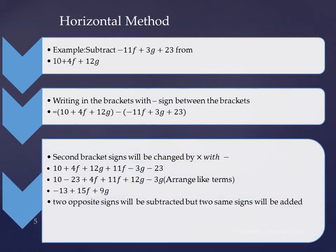Now in the second step, second bracket sign will be changed by multiplying with minus. You can see here, first bracket remains same, 10 plus 4f plus 12g. But the second bracket, minus multiplied by minus is plus 11f, minus multiplied by plus become minus 3g, and minus multiplied by plus become minus 23.